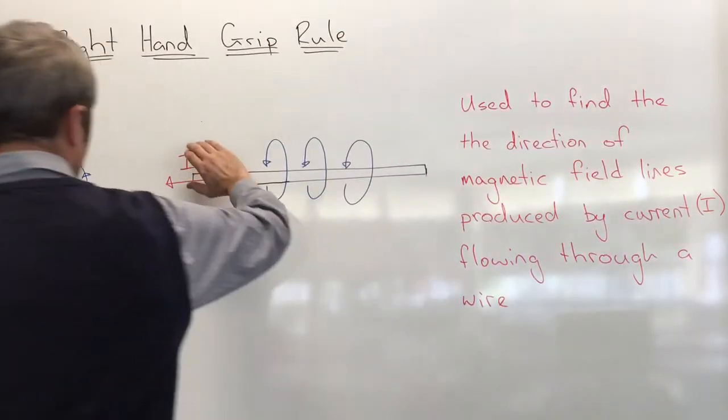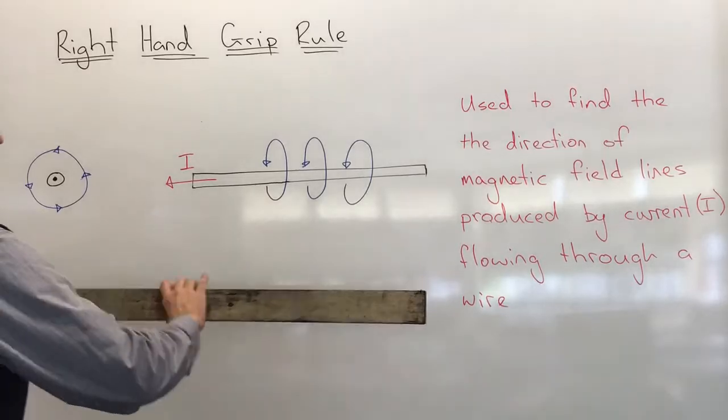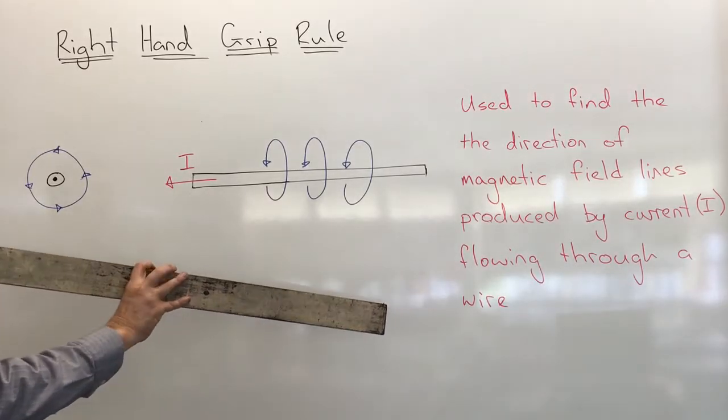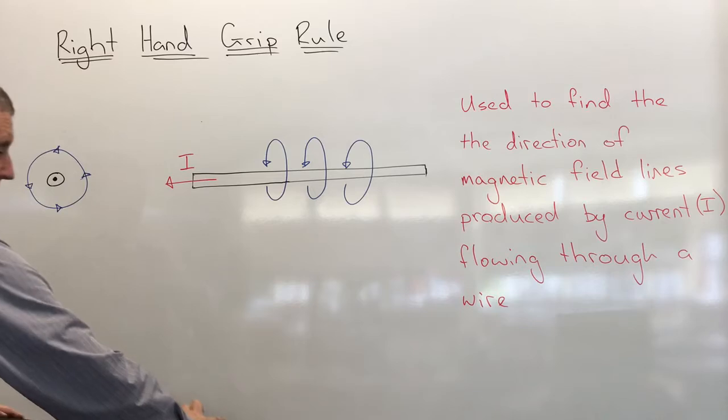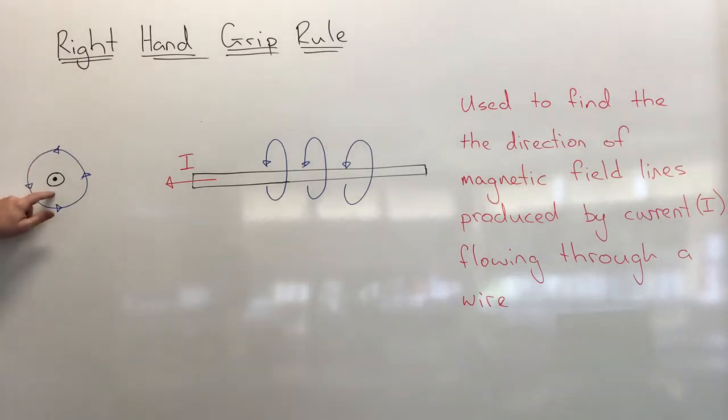Now if we could take this wire, imagine it was looking like this and we flip it around and we look from this way, so we draw a representation like this.